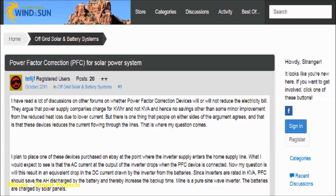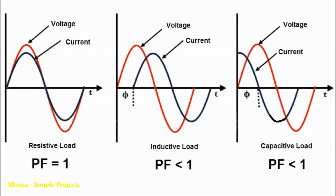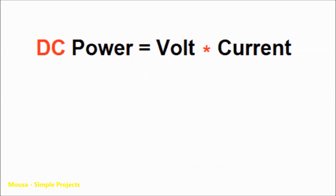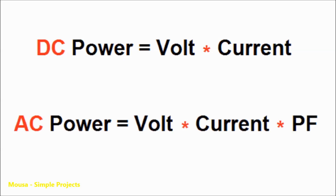The power factor is a number between zero and one that refers to the phase shift between voltage phase and current phase in AC appliances. The power in DC devices is equal to voltage times current, but the power in AC devices is equal to voltage times current times power factor.